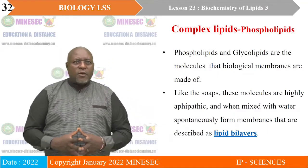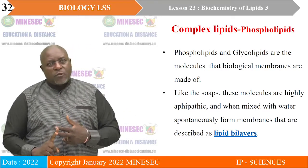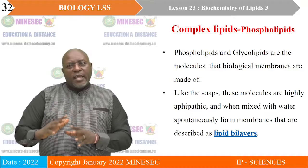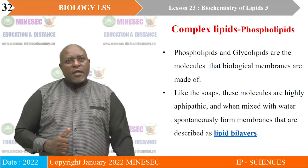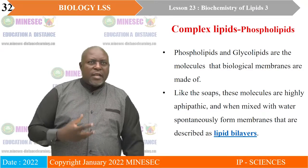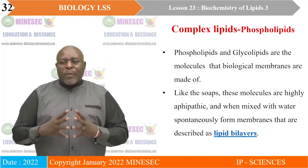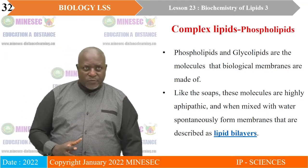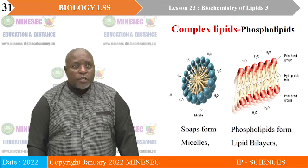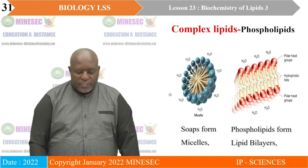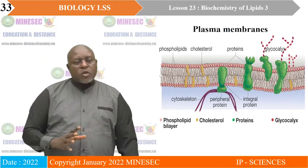Phospholipids and glycolipids are molecules of biological membranes and make up biological membranes. Glycolipids are lipid plus a glucose residue, and phospholipids have two long tails of fatty acid residue. Like soap, these molecules are highly amphipathic, and when mixed with water spontaneously, they form membranes described as lipid bilayers. This is a typical structure of a plasma membrane, and this model is called the fluid mosaic model, which we will still study in detail.